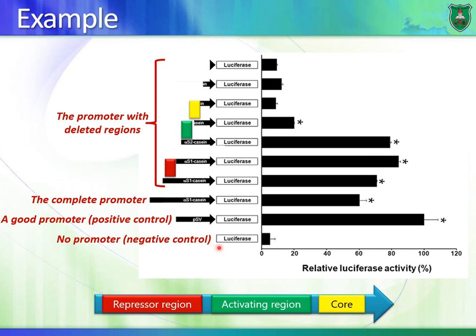Here we have the luciferase gene with no promoter whatsoever. That means there should be no production of the luciferase protein. Why is there still some signal? There can be transcription leakage — even without a promoter, some RNA polymerase can leak and bind to the region, transcribing the luciferase protein. This is background, and it's what is known as a negative control — a sample that we know should not work.